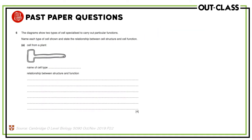This essay question says the diagram shows two types of specialised cells. Name each type of cell shown and state the relationship between cell structure and cell function. The first cell shown is from a plant — it's a typical plant cell except for this extension, which is quite obviously the root hair. So the cell we are talking about is the root hair cell.